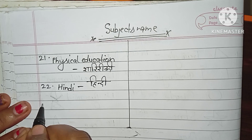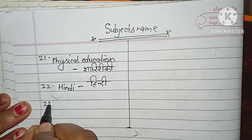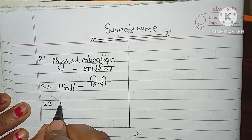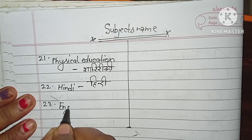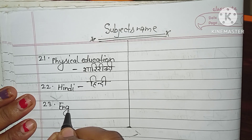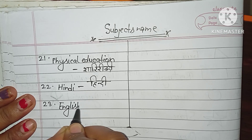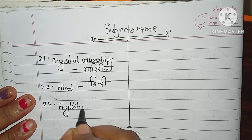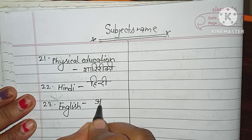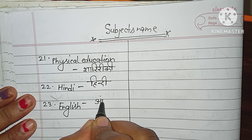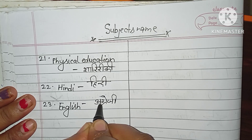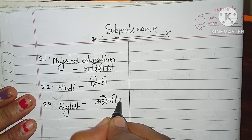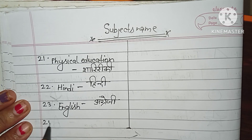Number 23, English, E-N-G-L-I-S-H. English, Angreji, Number 24.